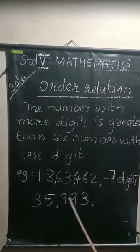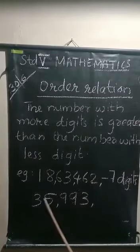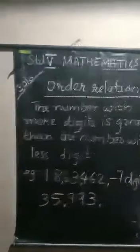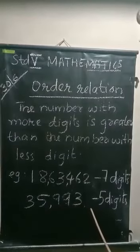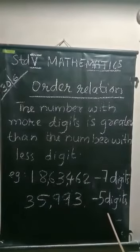Next number. 1, 2, 3, 4, 5 digits. 35,993.